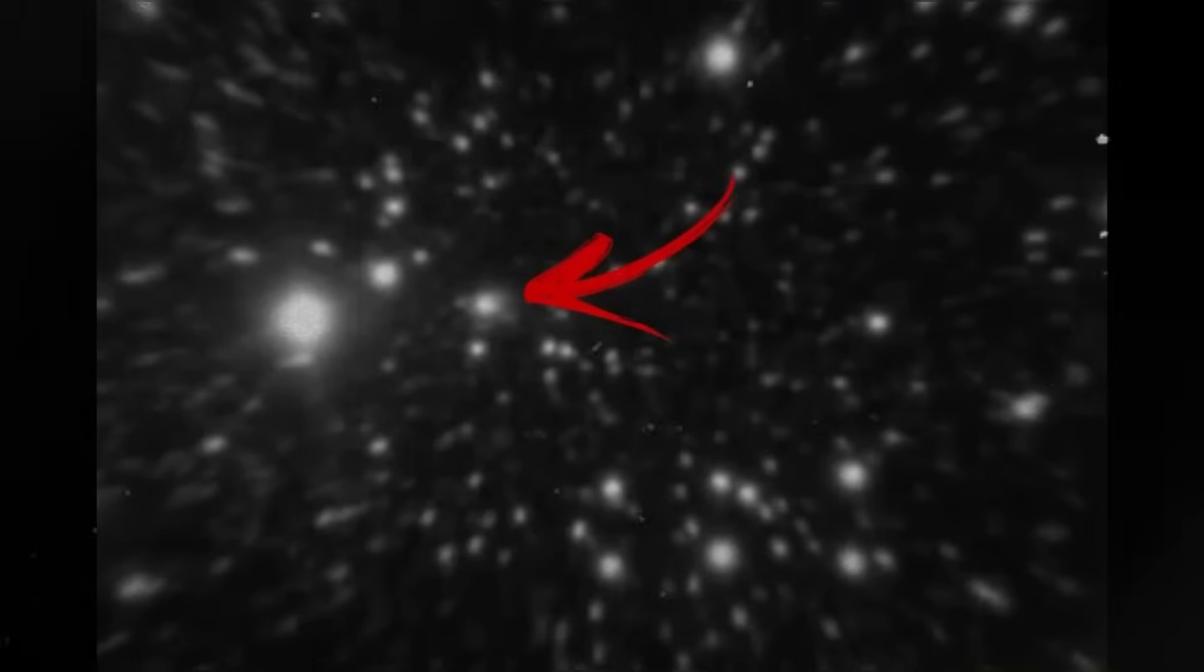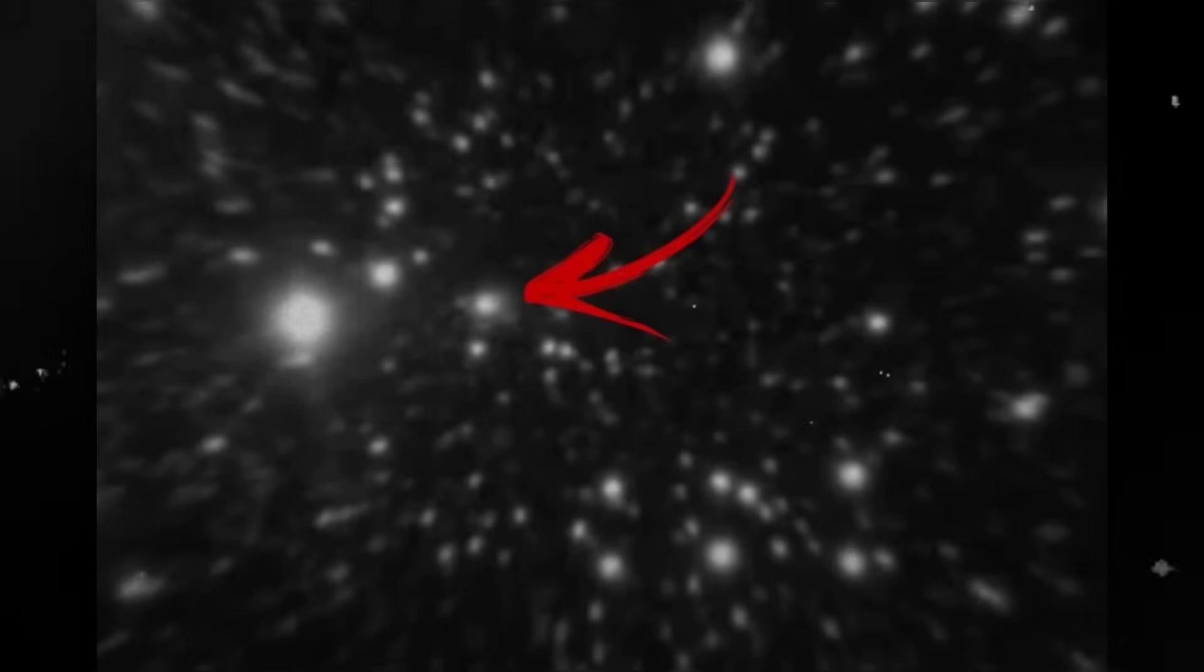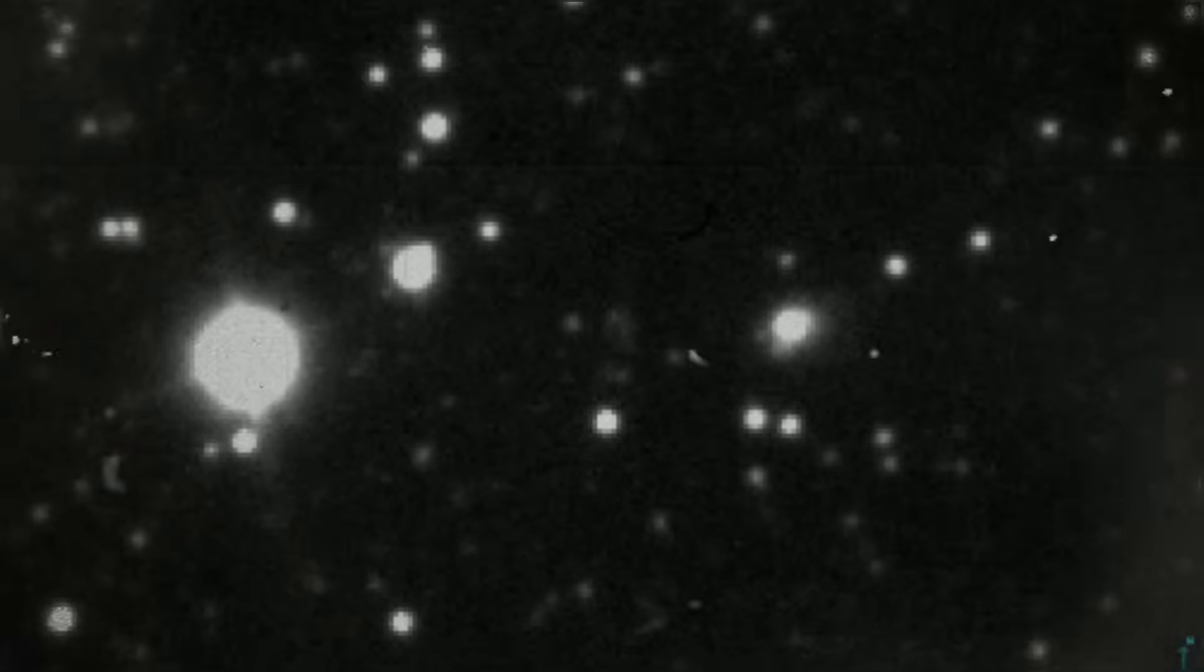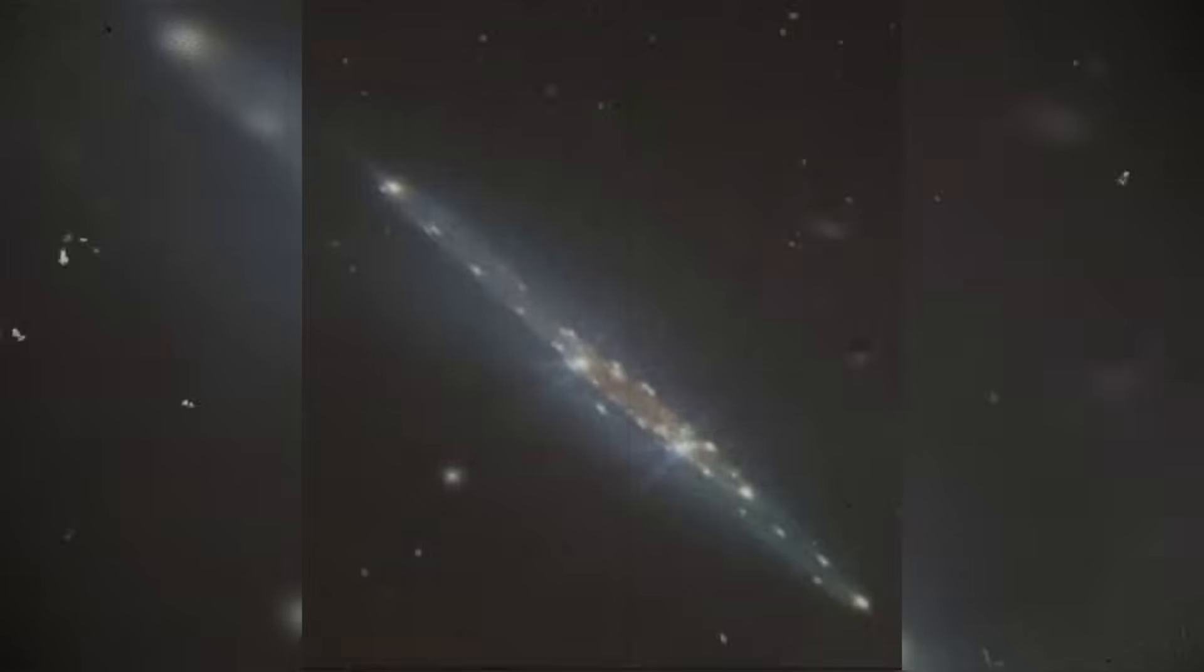The question researchers are now asking is simple but profound. If these tiny bursts are not random, what is guiding them? And is ATLAS using these subtle corrections to maintain a stable path through the solar system? For now, the only thing we can say with confidence is that ATLAS is not drifting passively. It is moving with a pattern.